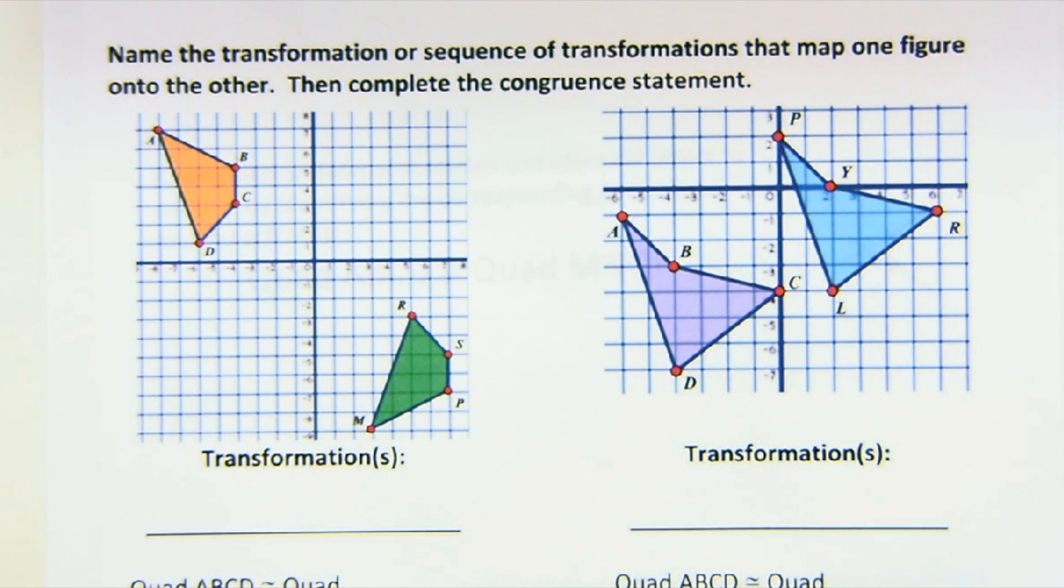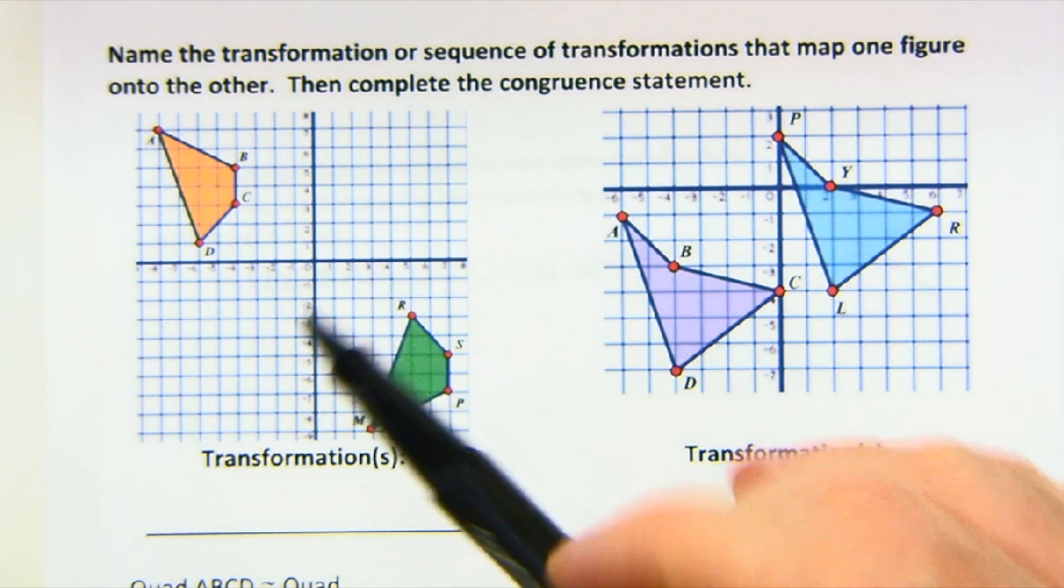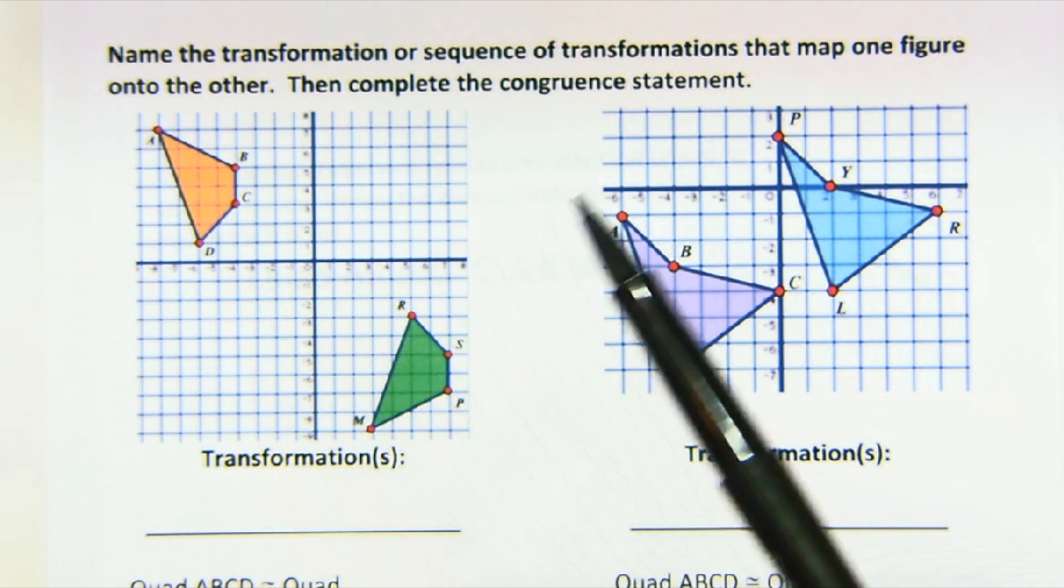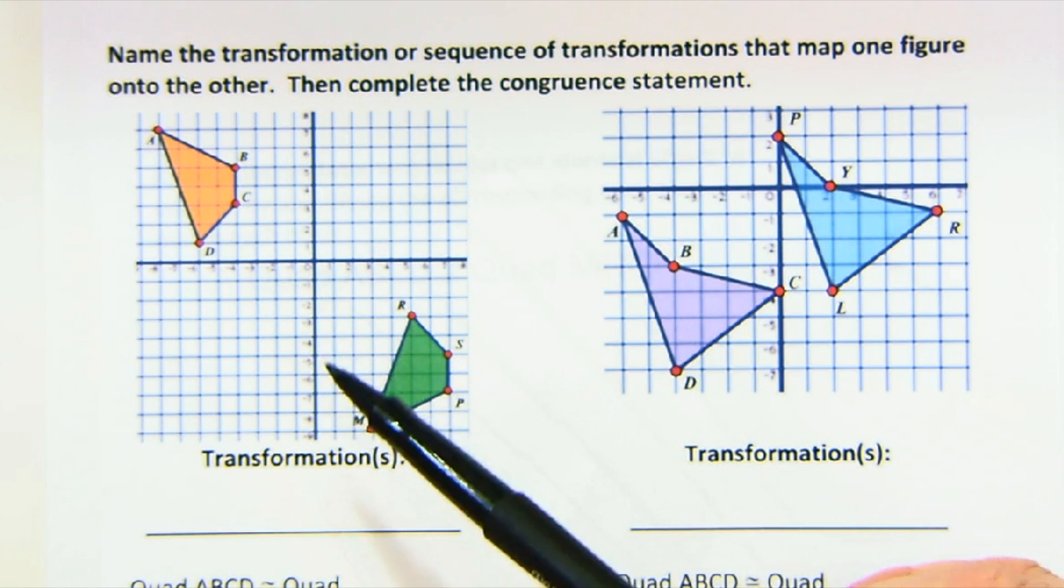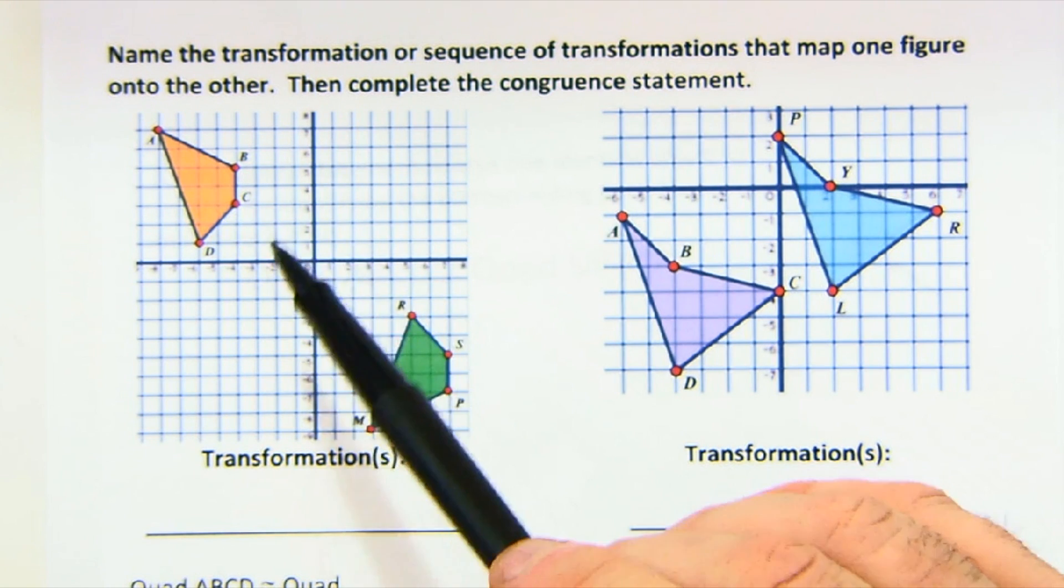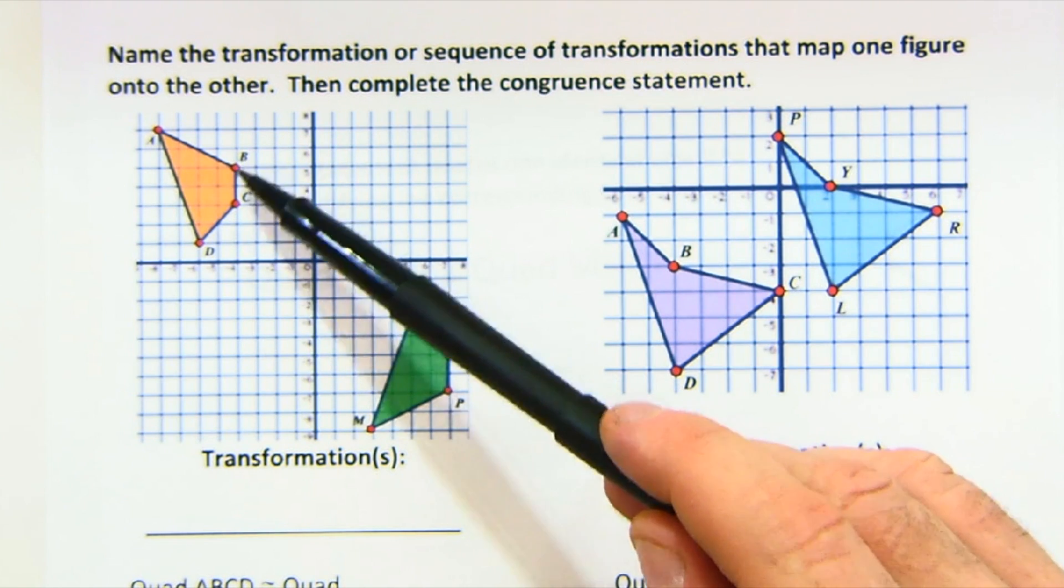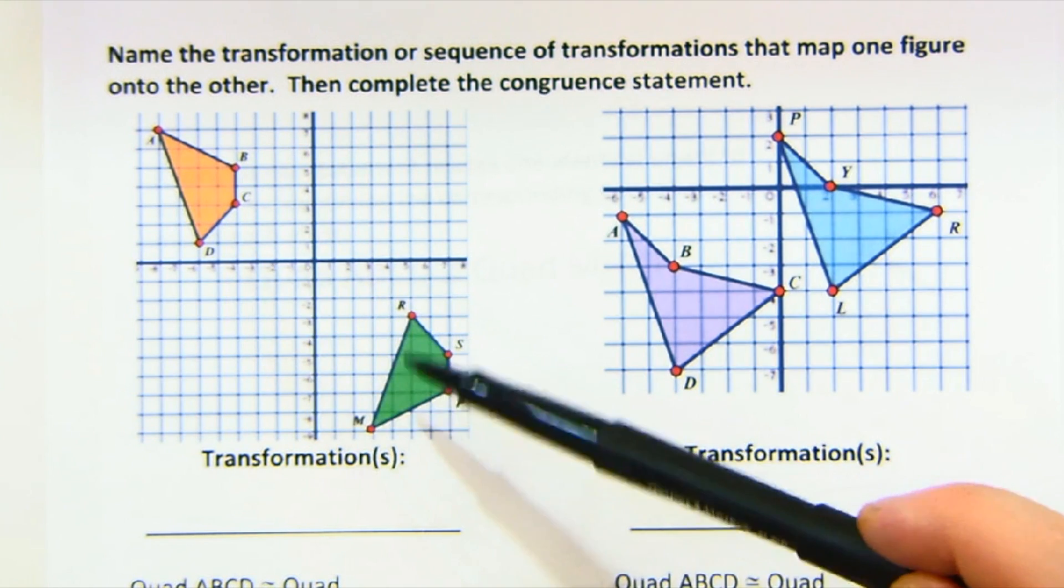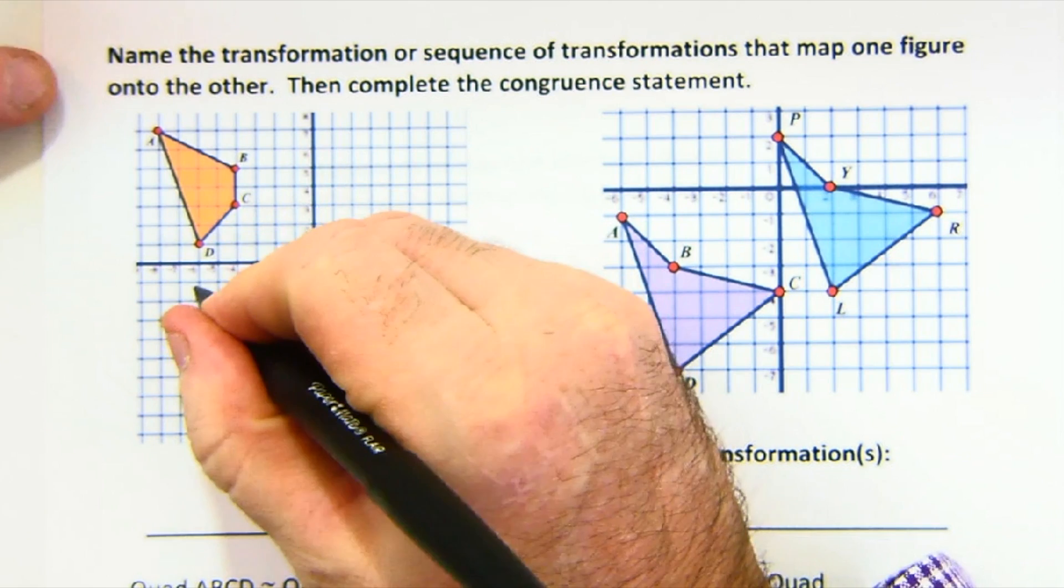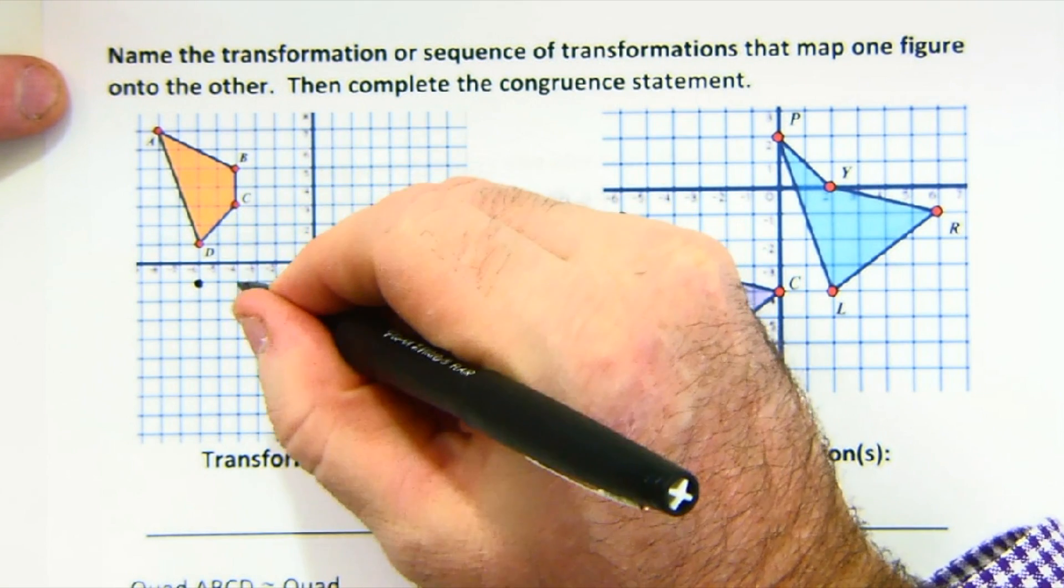I can see that things are changed between the shapes, so I want to think about is this a reflection, is this a rotation, is there a translation. One thing I do notice is it seems to me like the orientations of these are reversed. So probably what I would do first is the reflection.